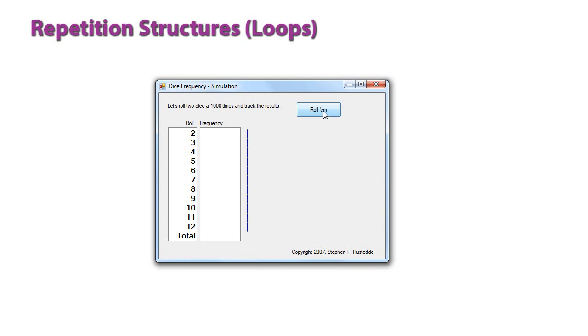So I'm going to roll my dice 1,000 times. I'm going to click the button. And there we go. It's done 1,000 times. And you can see that number seven comes up the most times in that 1,000 rolls.